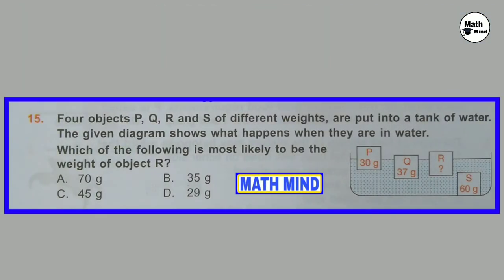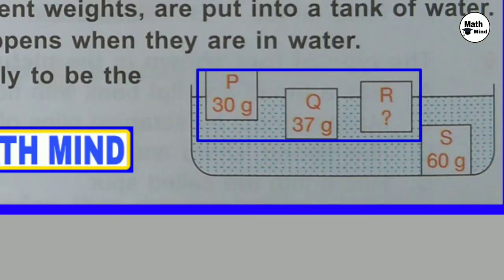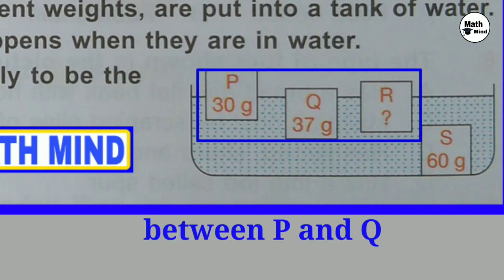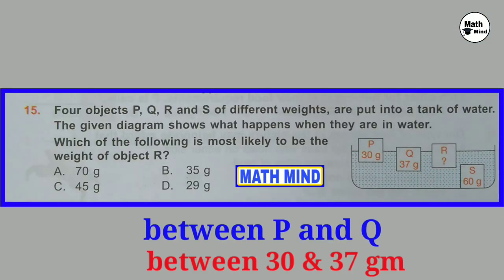Question number 15: Four objects P, Q, R and S of different weights are put into a tank of water. The given diagram shows what happens when they are in water. Which of the following is most likely to be the weight of object R? R is floating. It floats slightly above object Q but below object P. So its weight must be between P and Q, between 30 and 37 grams. Correct option is B: 35 grams.